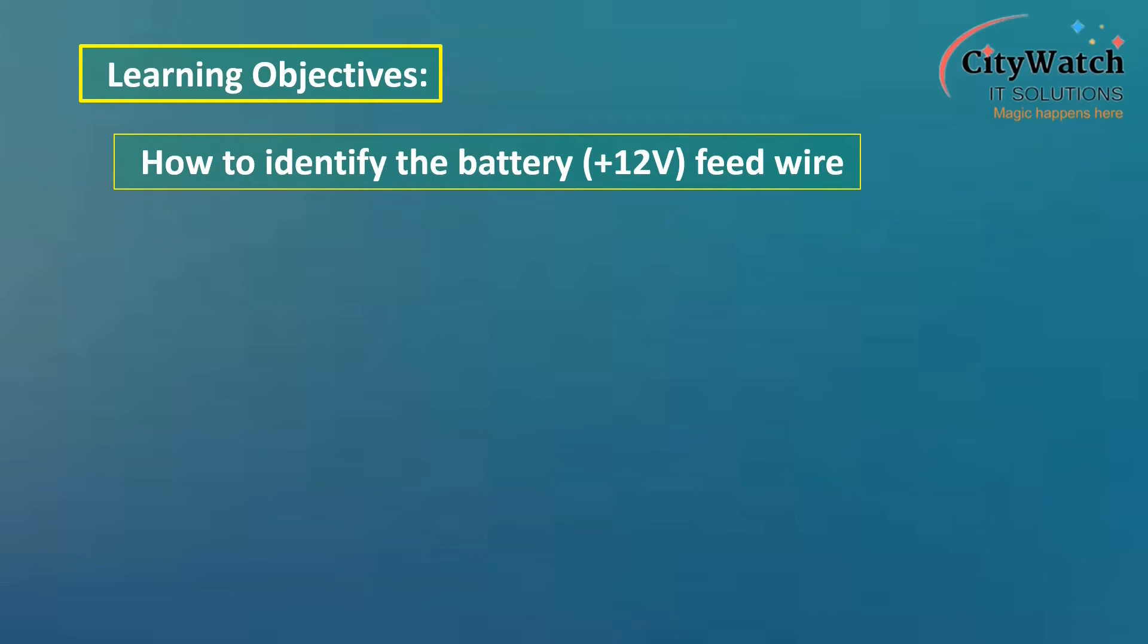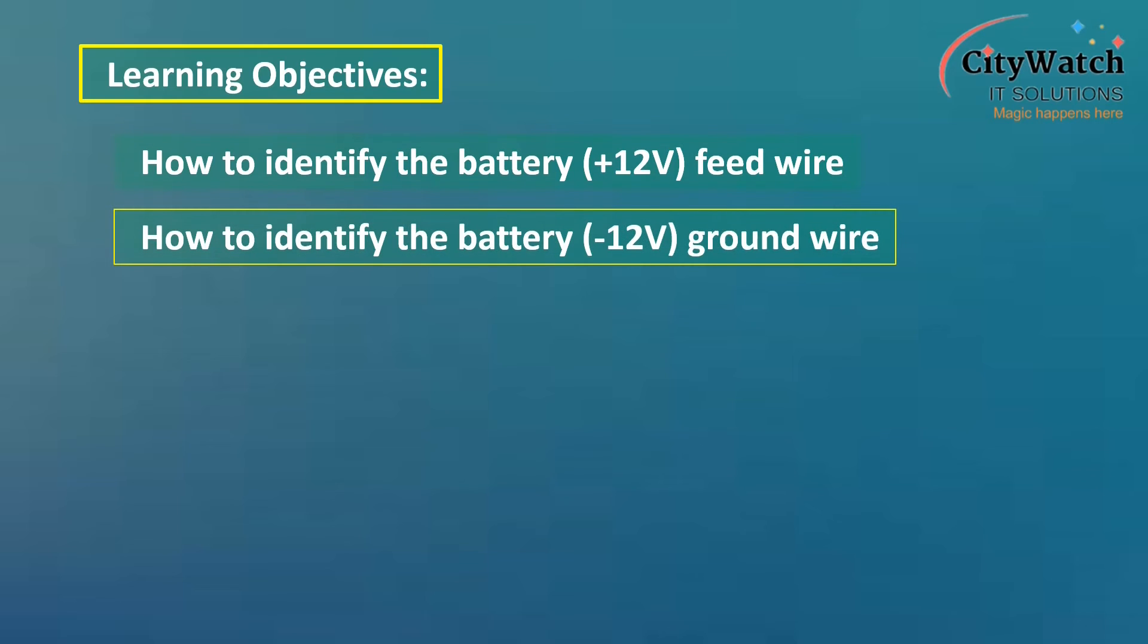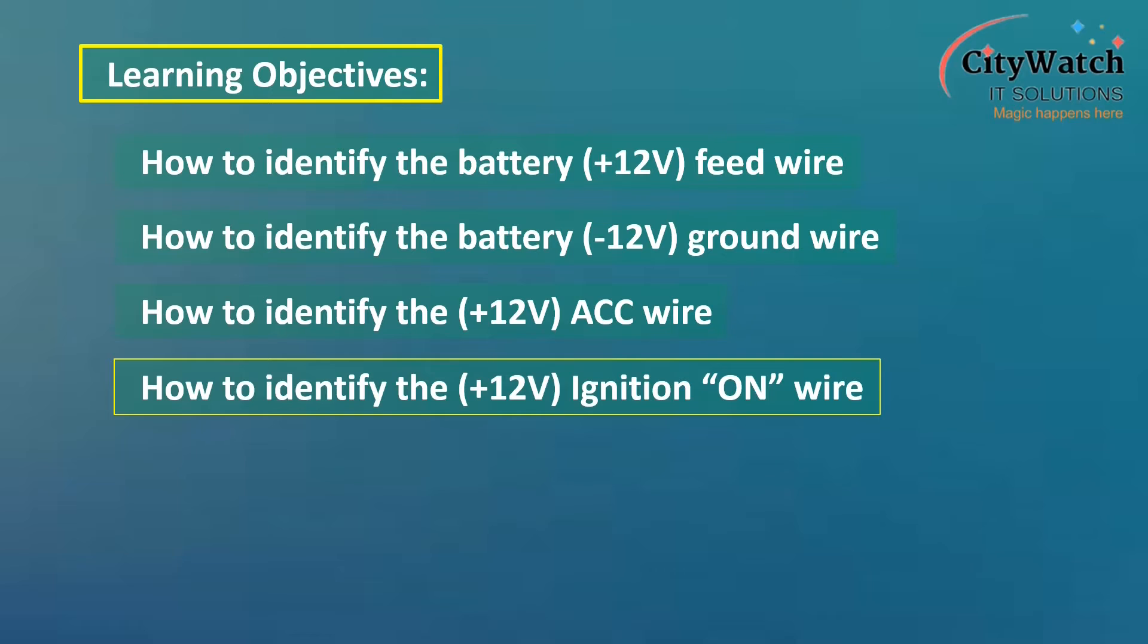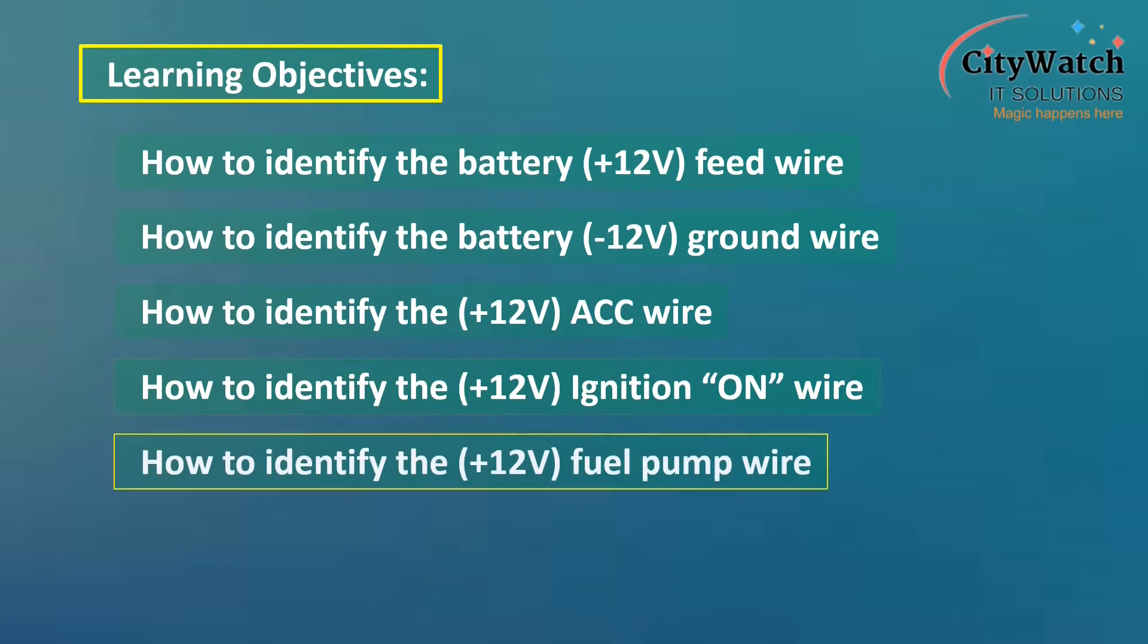The negative ground wire from the battery negative terminal, the accessory circuit wire from the vehicle ignition key, the ignition circuit wire from the vehicle ignition key, and the positive feed wire powering the fuel pump.